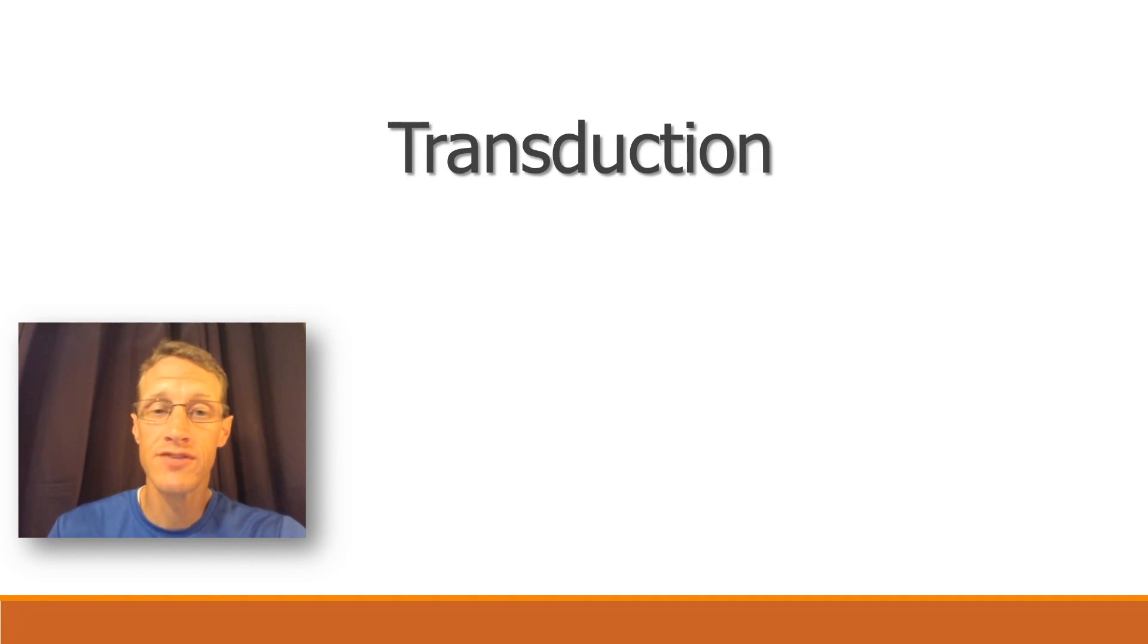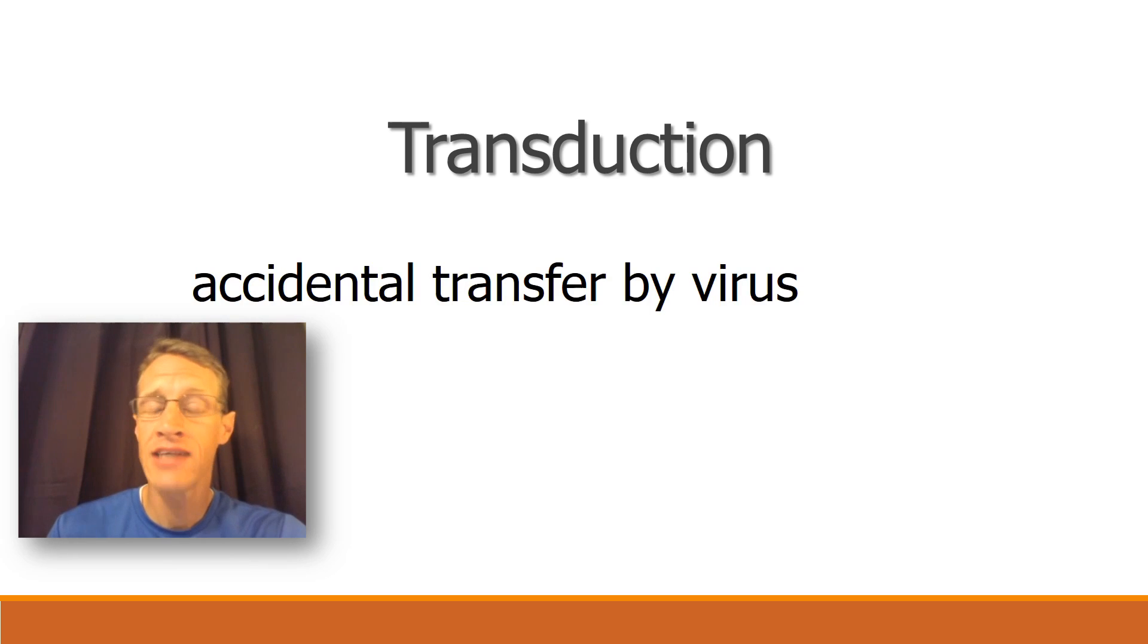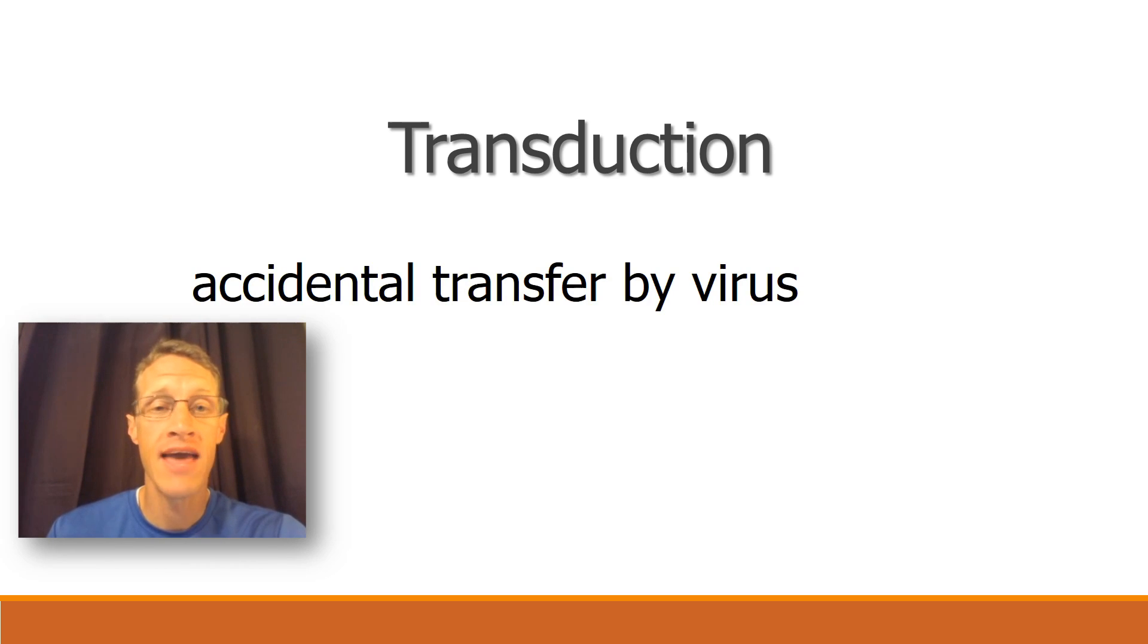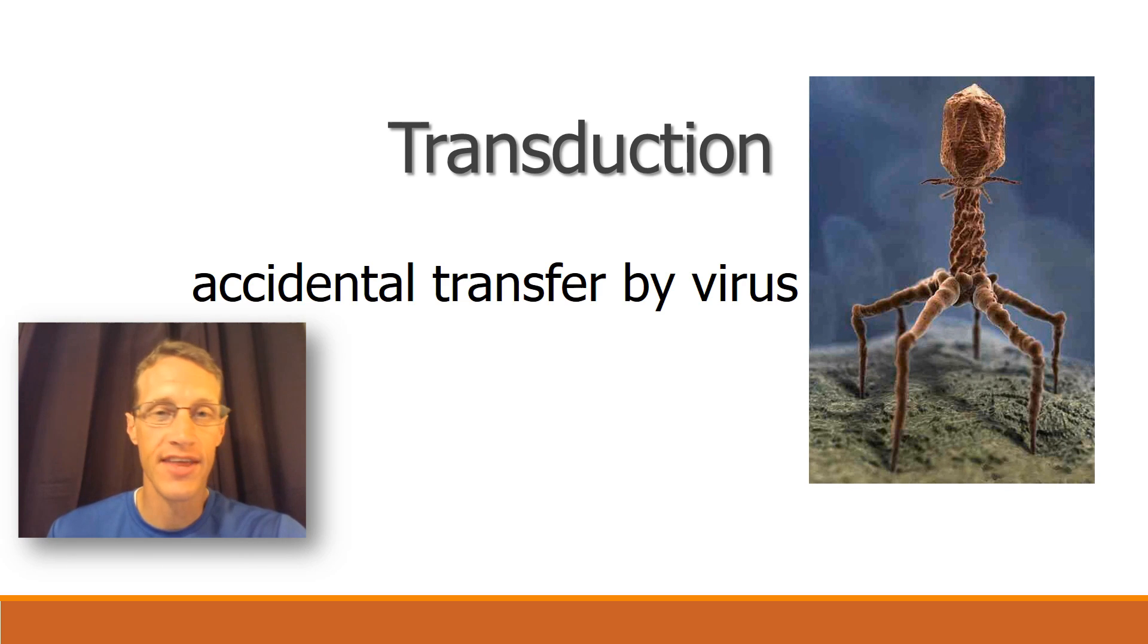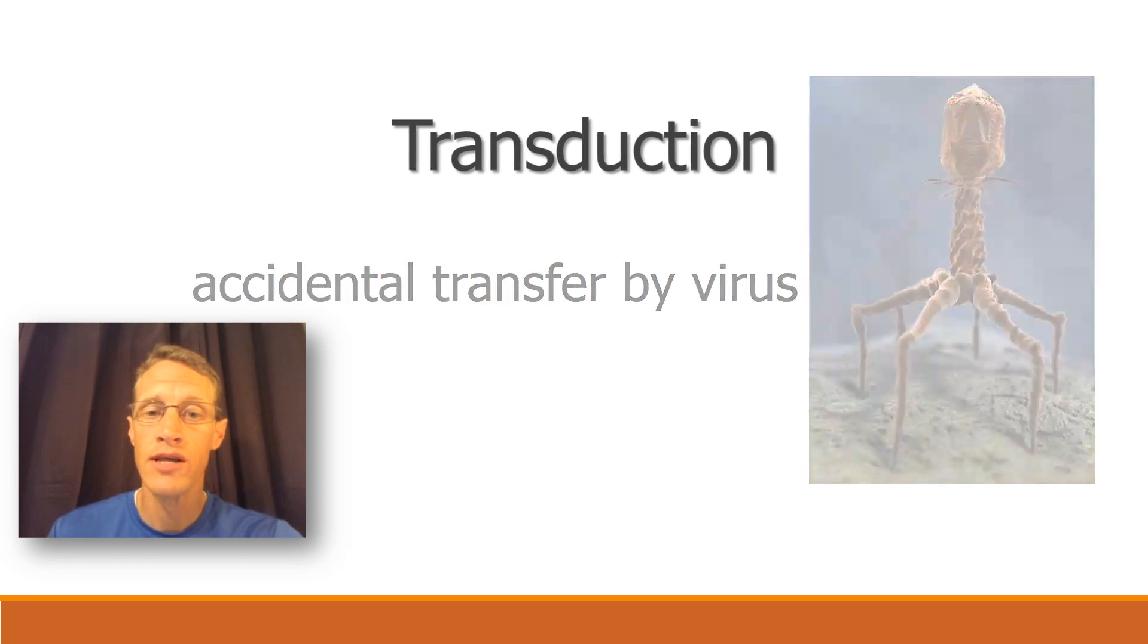The first method of gene transfer between bacteria is called transduction, which could be defined as accidental transfer by a virus. This spider robot looking thing is called a bacteriophage. Kind of scary. But this virus infects just bacteria. And when it infects bacteria, it can accidentally move genetic material between its hosts. Let's look at how.